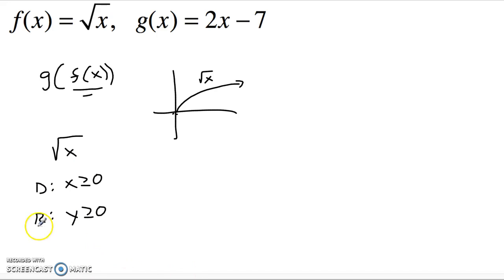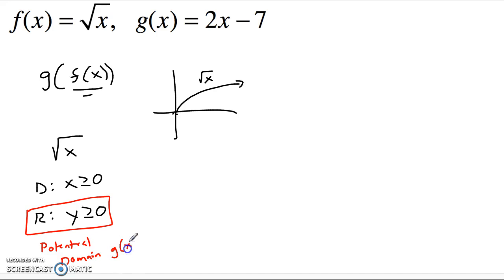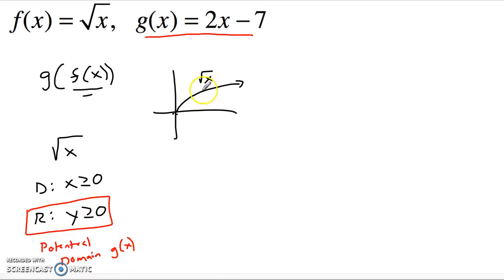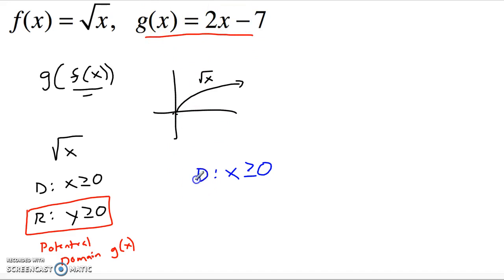This range will become the potential domain for g of x, the outside function. Now g of x is a nice linear equation — its domain is all real numbers — so none of those outputs are going to give it a problem. In terms of the domain of this composition, the domain is x greater than or equal to zero. Anything greater than or equal to zero makes the inside function happy, and nothing the inside function spits out causes trouble for this linear equation.